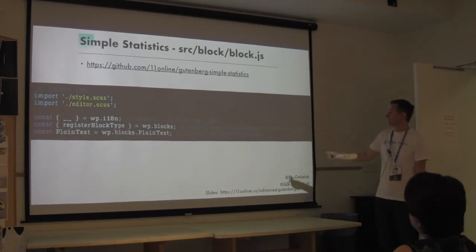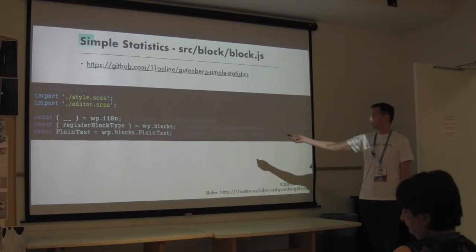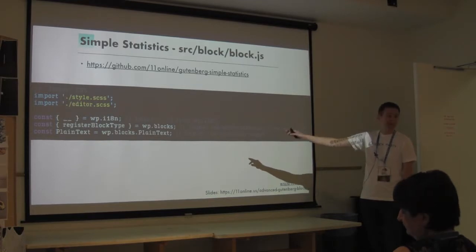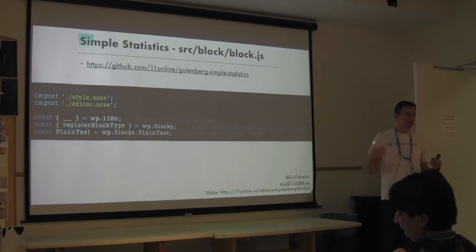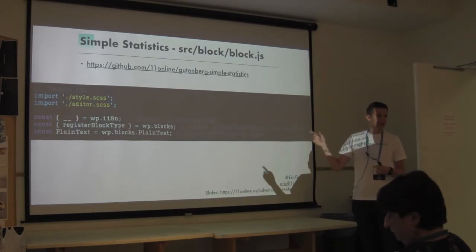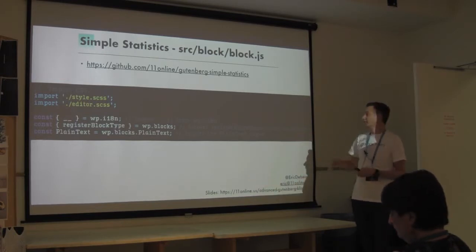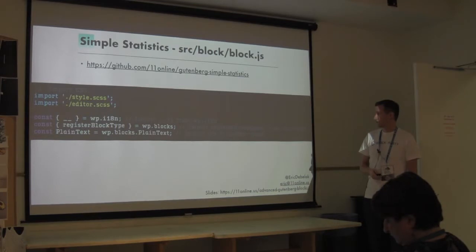We move to our SRC block.js - this is where all the React stuff happens. At the top of the file we're importing some styles, we're importing I18n which is the internationalization stuff, and then we start importing stuff from the WP global. If you just go in your browser console on a WordPress site and type WP, you can see tons of stuff associated with that. With Gutenberg, it adds all the blocks and components to this WP global. We're going to import register block type and our plain text component.